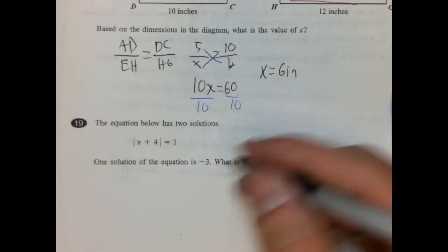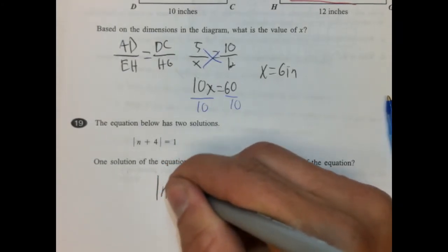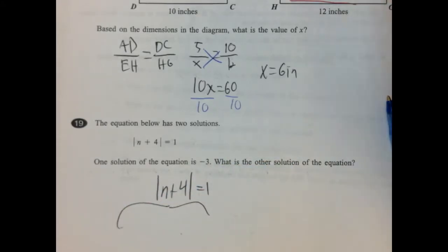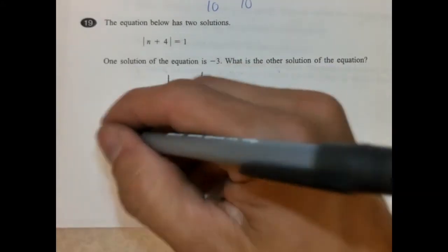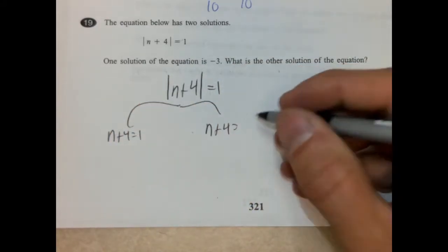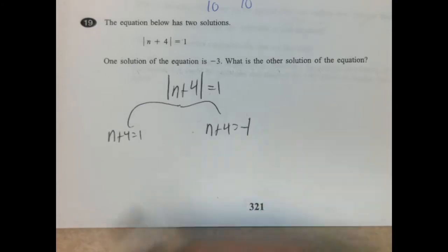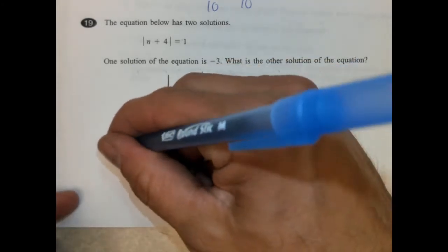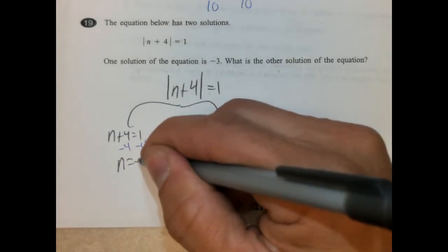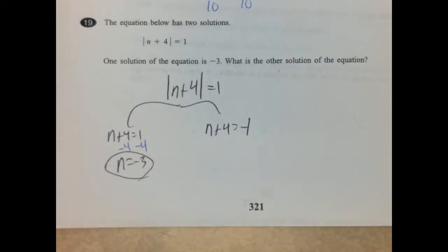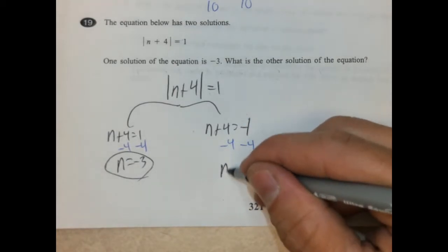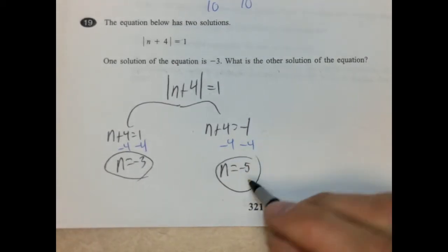But we can solve it also the other way. So n plus 4 is 1. I'm going to split this and rewrite it. So n plus 4 equals 1, and then n plus 4, and we're going to change this to negative 1 and solve each one. So subtract 4 from both sides, and we get n equals negative 3, which we already have that one. For this one, we're going to subtract 4 from both sides, and n is equal to negative 5, which is the answer we need.